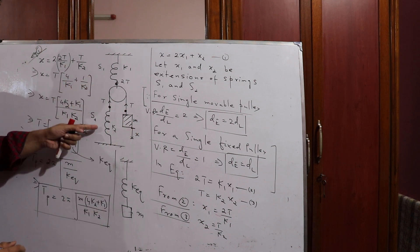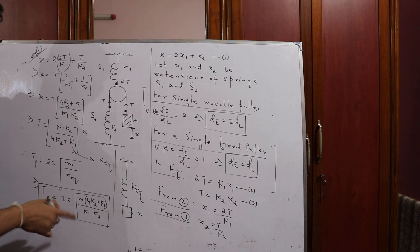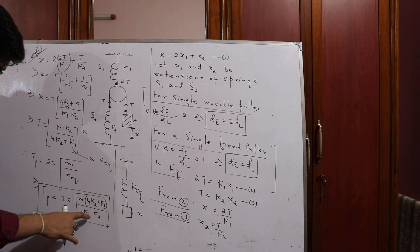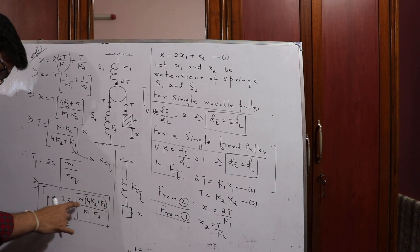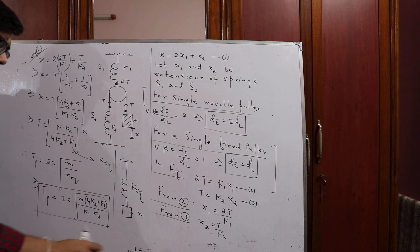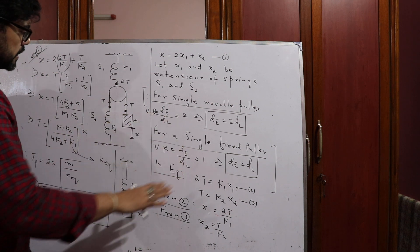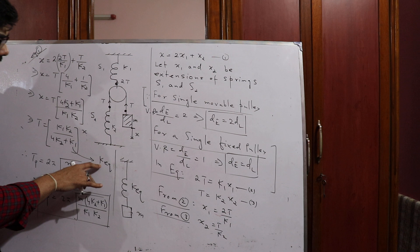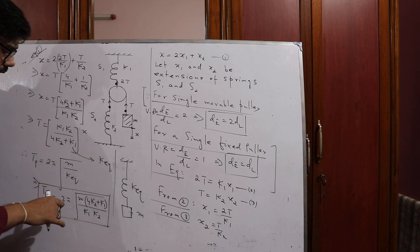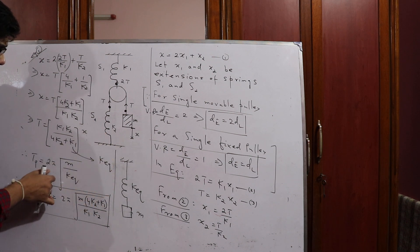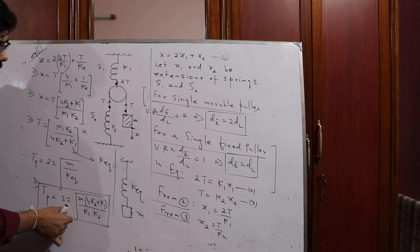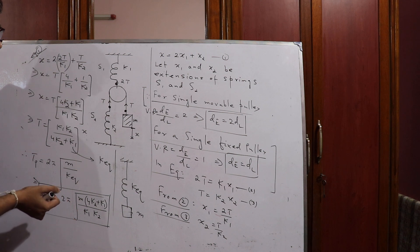Now, if the two springs have identical spring constants — if k1 = k2 = k — then the denominator becomes 4k + k = 5k, and the numerator k·k = k². So k_equivalent = k²/(5k) = k/5, giving a time period of 2π√(5m/k). That is the answer. We used a simple approach to find k_equivalent of the system and then applied T_period = 2π√(m/k_equivalent) to find the time period.